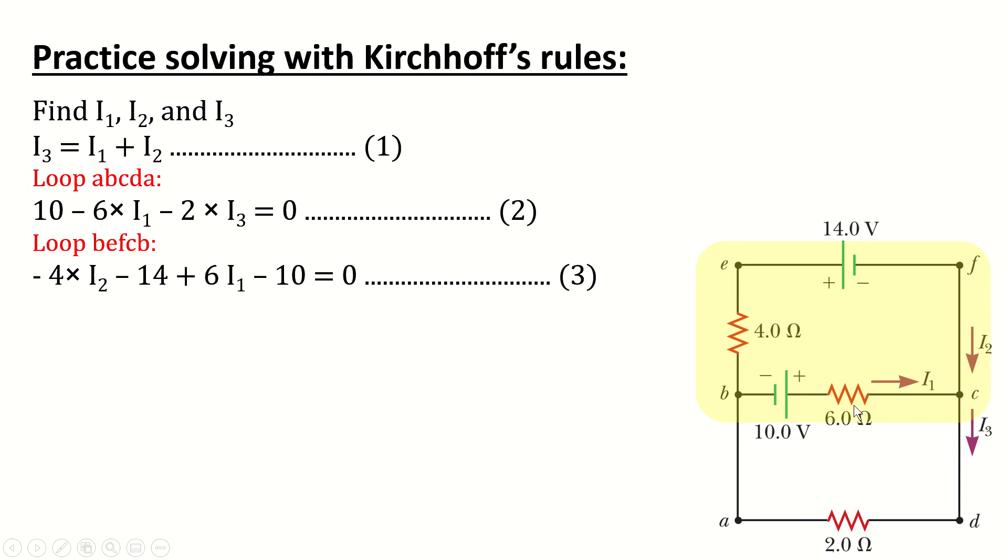Then, back again to the resistor of 6 ohms, we are traveling in the opposite direction supposed by I1, so it will be plus 6 I1. Then, back again to the battery with 10 volts, we are traversing from positive to negative poles, so it will be negative 10.